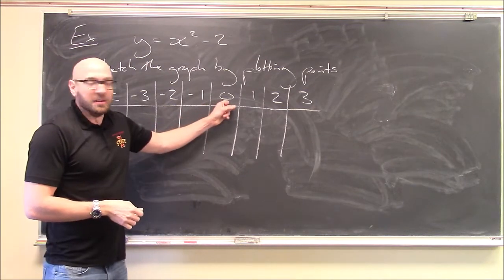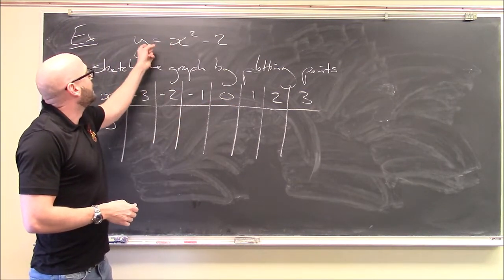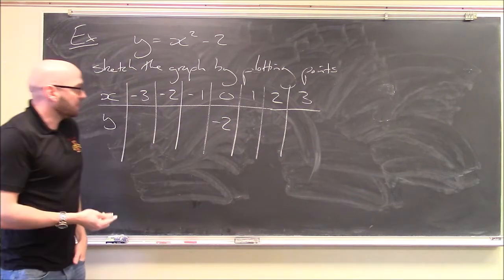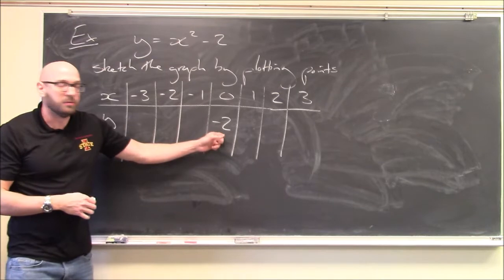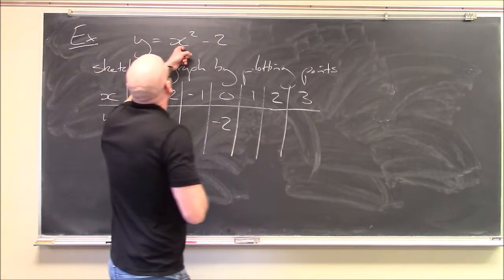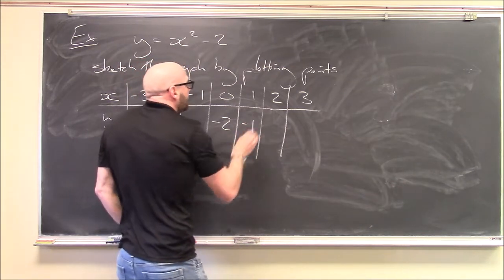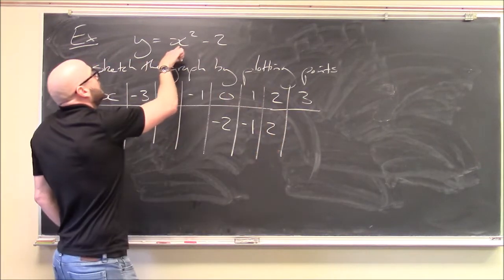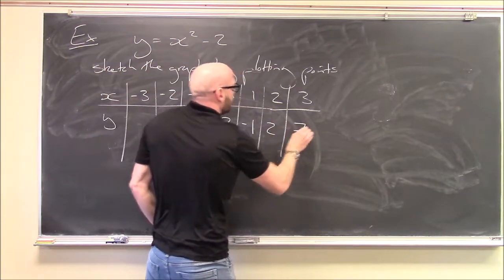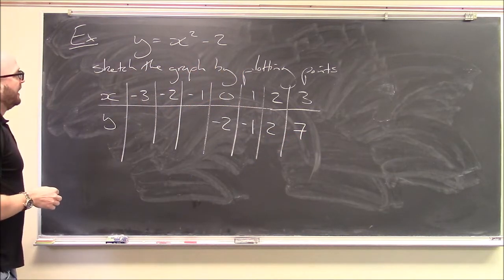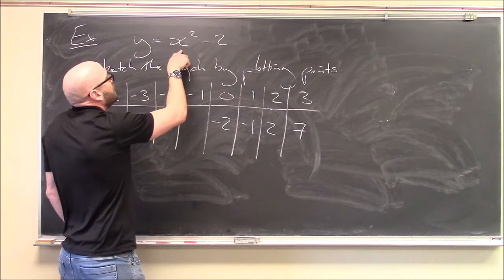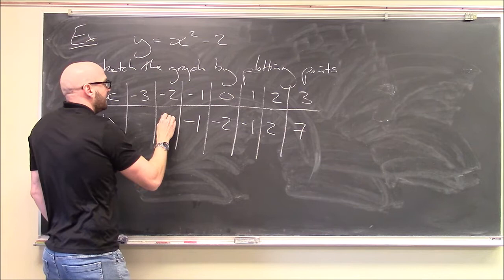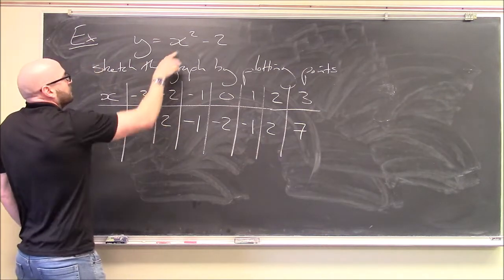Plugging in 0: y = 0² − 2 = −2. Plug in 1: 1² − 2 = −1. Plug in 2: 2² − 2 = 4 − 2 = 2. Plug in 3: 3² − 2 = 9 − 2 = 7. For negatives: (−1)² − 2 = −1, (−2)² − 2 = 2, (−3)² − 2 = 7.